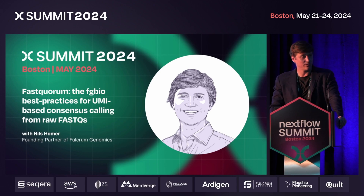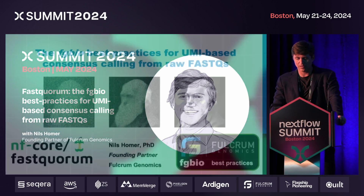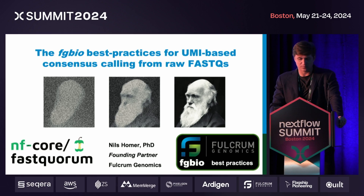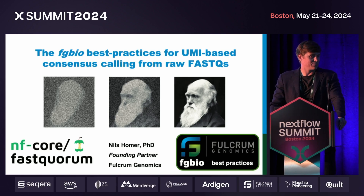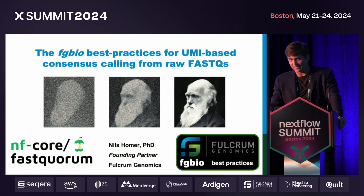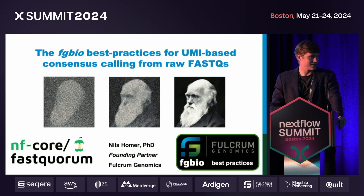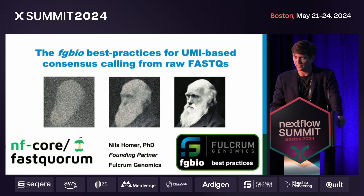I'm here to talk today about a new nf-core pipeline called FASTQ Quorum that implements the FGBIO best practices for UMI-based consensus calling. It takes input FASTQs and then uses a quorum of observations to squash sequencing errors for ultra-accurate sequencing reads.